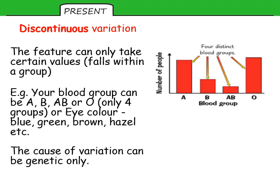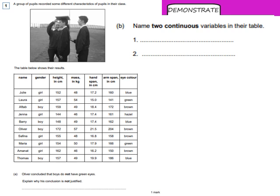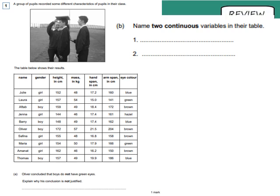Discontinuous variation is generally associated with types of variation caused by genetics only. Here's another exam question. A group of pupils recorded various characteristics of classmates in a table. Question A: Oliver concluded that boys do not have green eyes after this investigation — explain why his conclusion is not justified. Question B: using what we've just covered, name two continuous variables measured in their table. Pause here and have a go now.